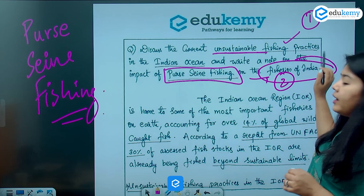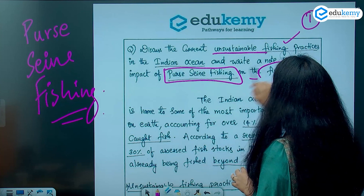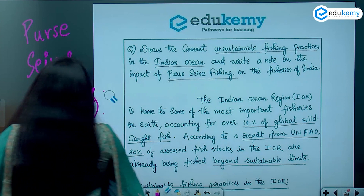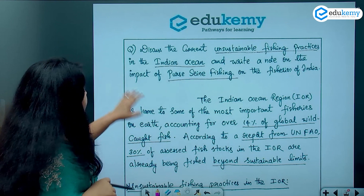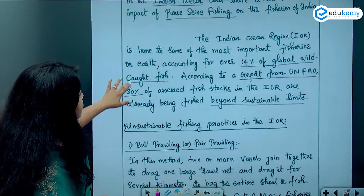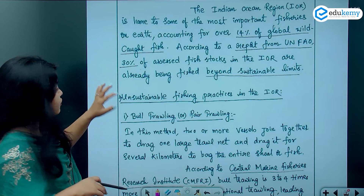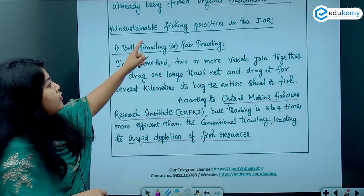This question was attempted by a student and it is worth 15 marks, which means you cannot go beyond 250 words. Before telling you the content, I will show you the length of this answer and how unsustainable it is. The introduction is fine — it mentions how much of the global wild fish catch comes from the Indian Ocean region — and the body attempts the unsustainable fishing practices in India.